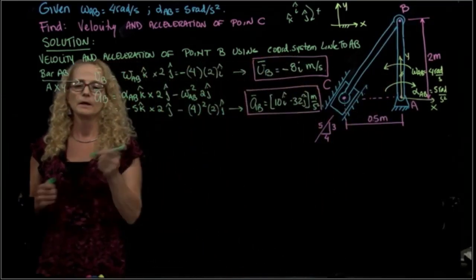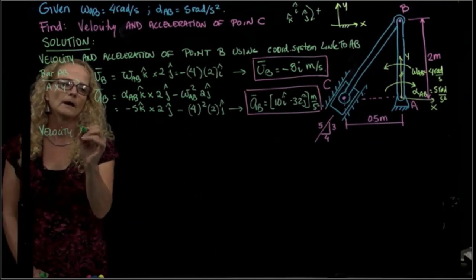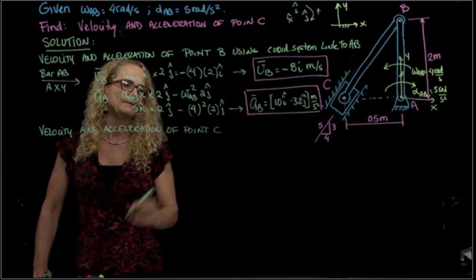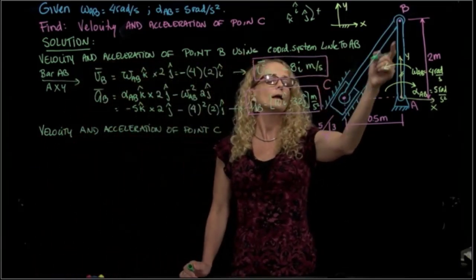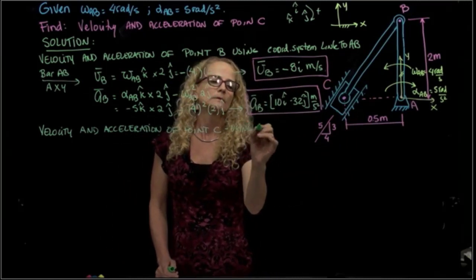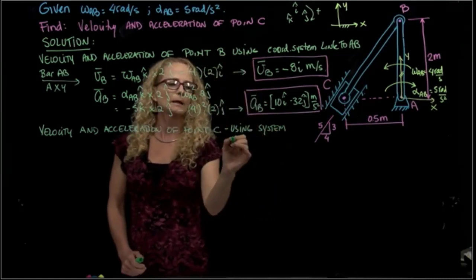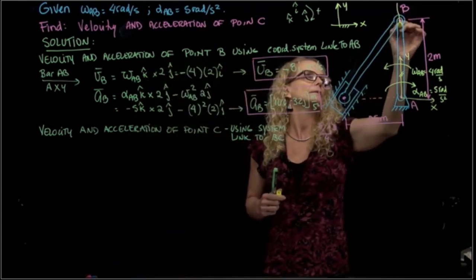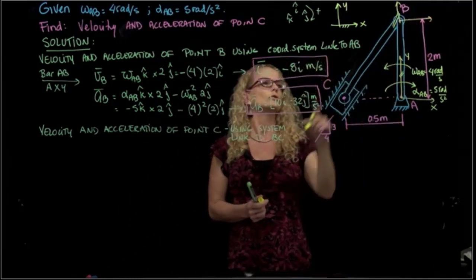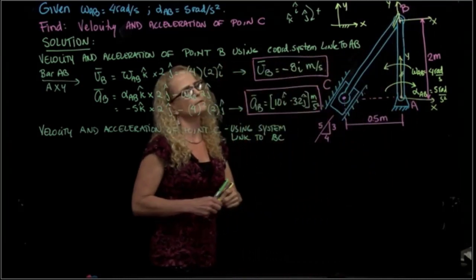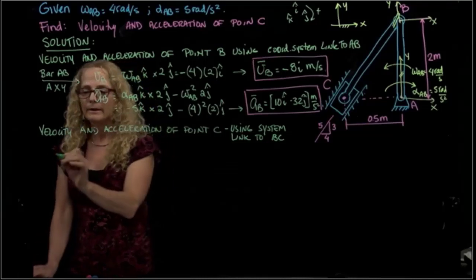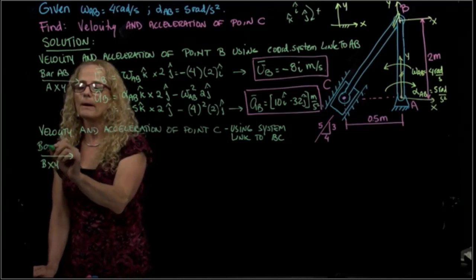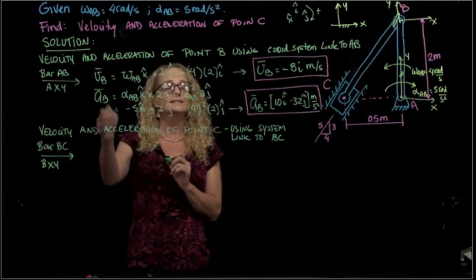We will now find velocity and acceleration of point C. Instead of using a coordinate system linked to AB, we will use a coordinate system linked to BC, with origin at B — X, Y linked to bar BC. We use exactly the same equations.